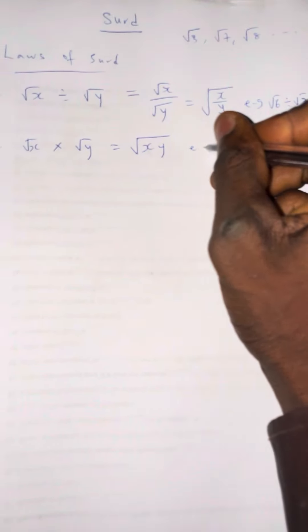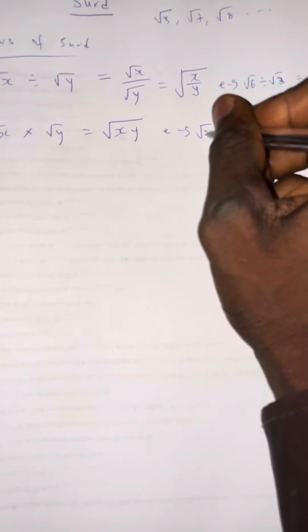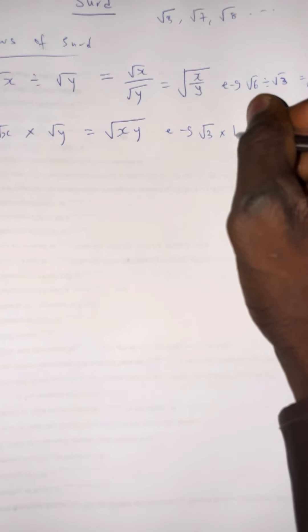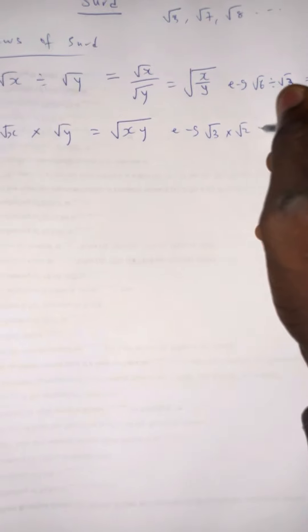Law number 2: when you have root x multiplied by root y, this becomes root of (x multiplied by y). For example, root 3 multiplied by root 2 becomes root of (3 × 2), giving the final answer root 6, because 3 times 2 gives us 6.